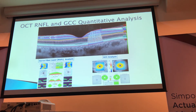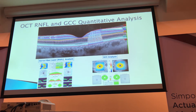We have two different modalities with OCT that we can use in evaluating patients with neuro-ophthalmic complaints. We have the retinal nerve fiber layer analysis and the ganglion cell complex quantitative analysis. You can add two different scans and get different information that can help in evaluating these patients.